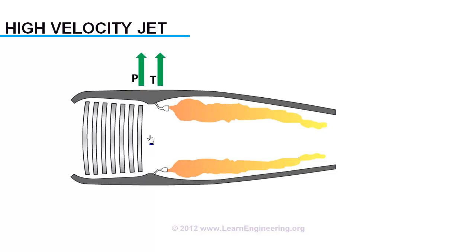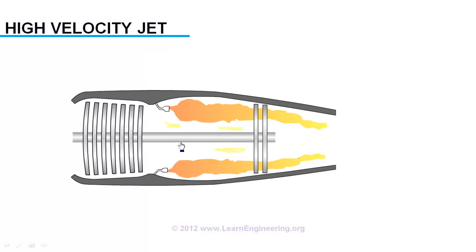But the compressor requires some power input to do that. This power is given by a turbine which is situated right after the combustion chamber. The turbine absorbs some amount of energy from the high energy fluid and transmits it to the compressor.